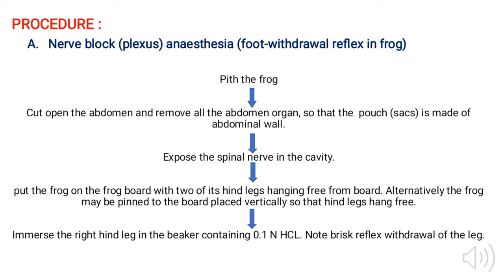Now coming to the procedure. We will see the three different procedures for the three different methods. The first method is nerve block anesthesia, also known as foot withdrawal reflex in the frog. The first step is to pit the frog and cut open the abdomen from the abdominal cavity region. Remove all the abdominal organs so that a pouch-like or sac-like abdominal cavity is made.